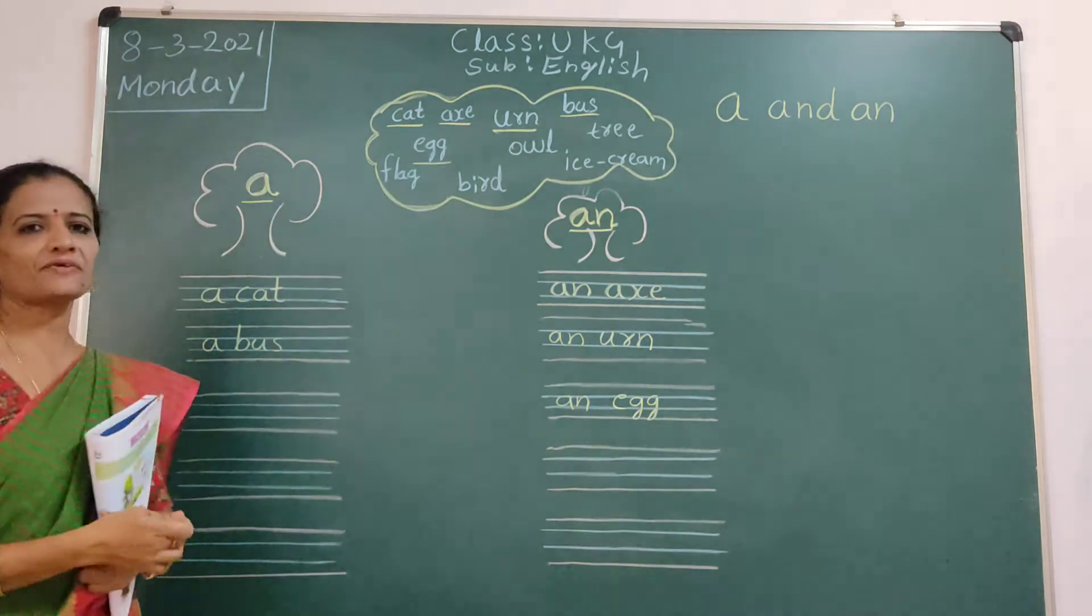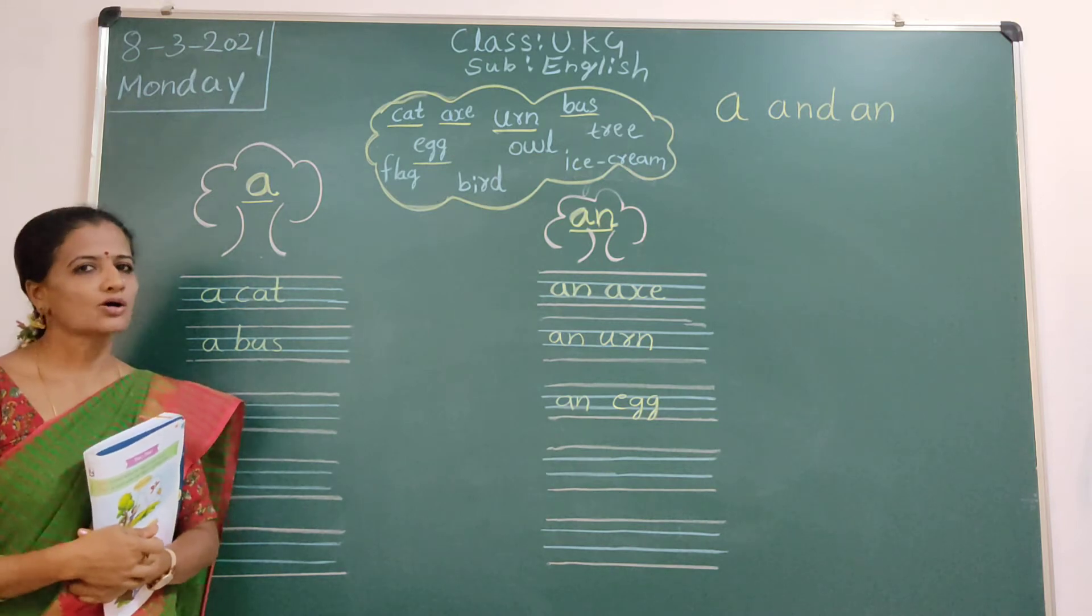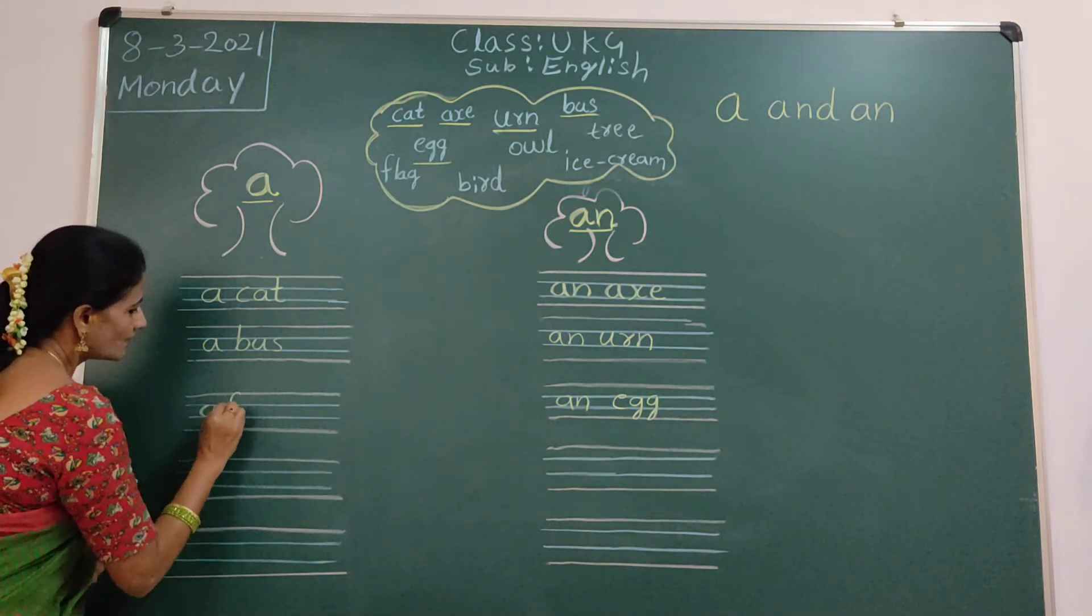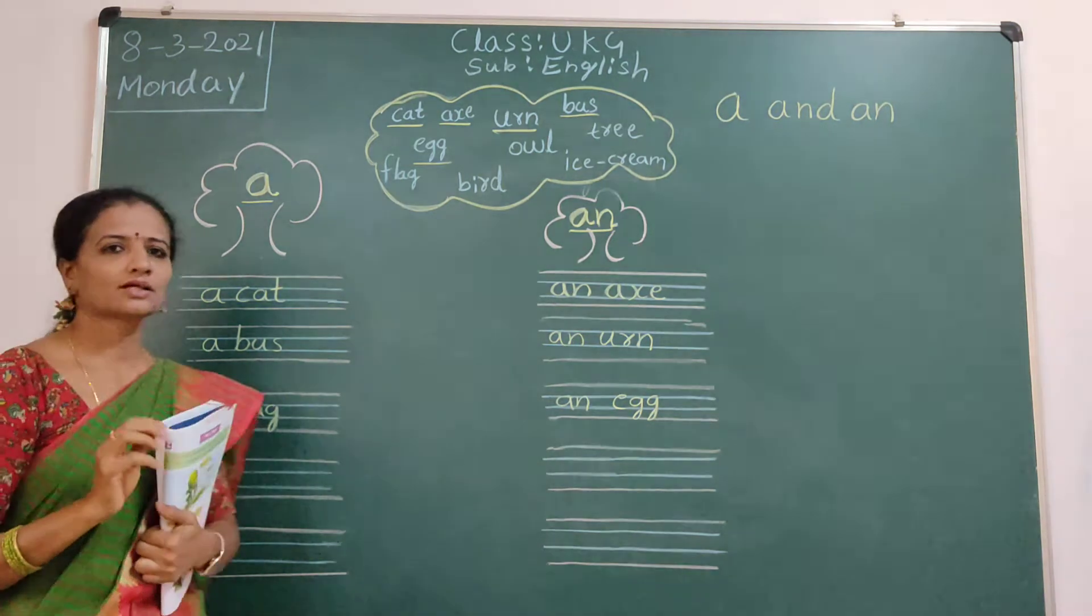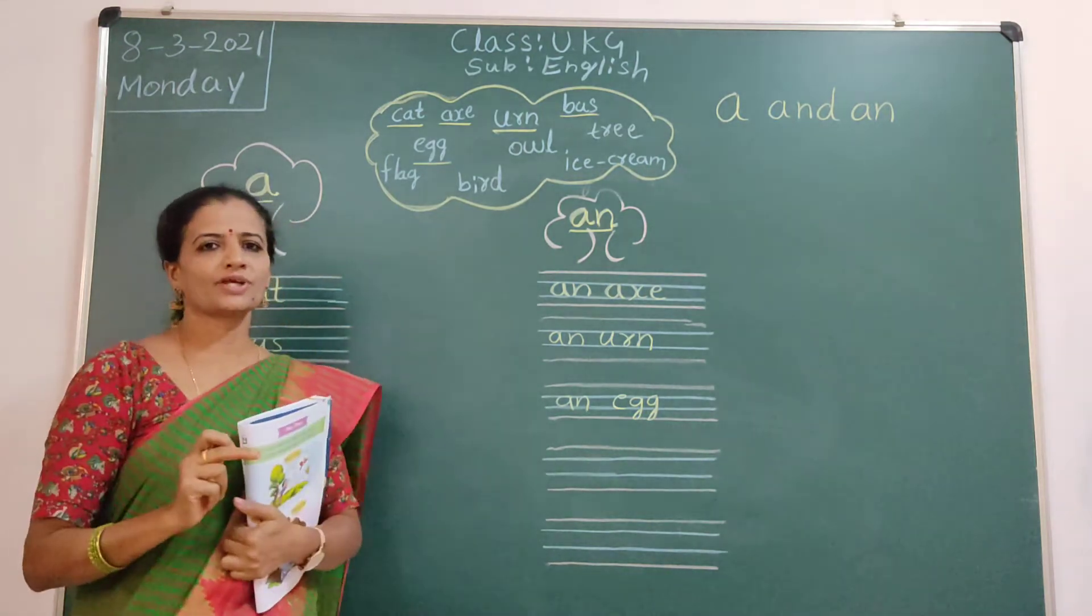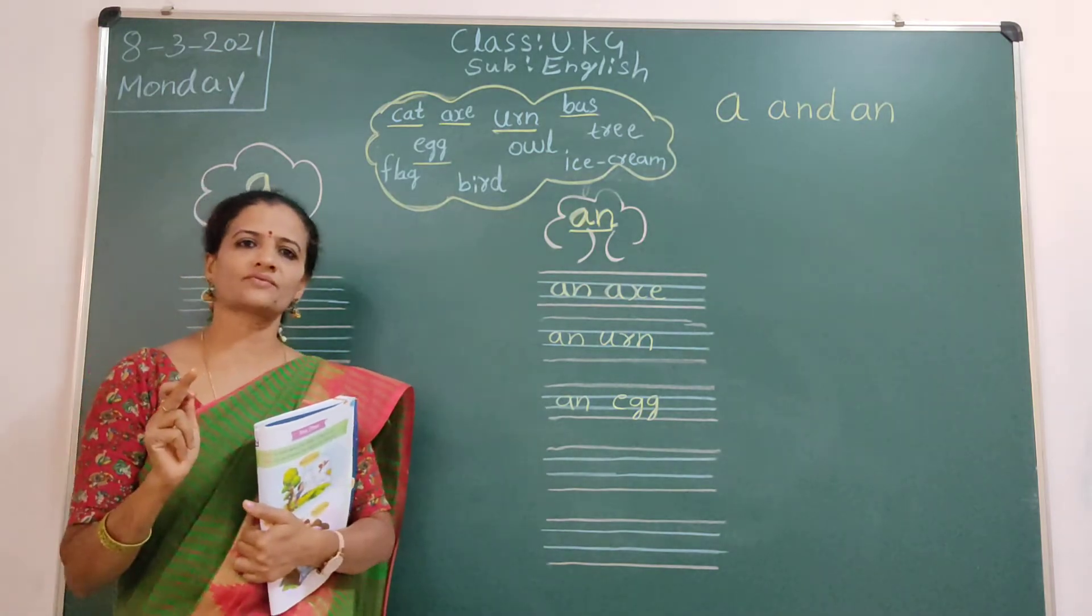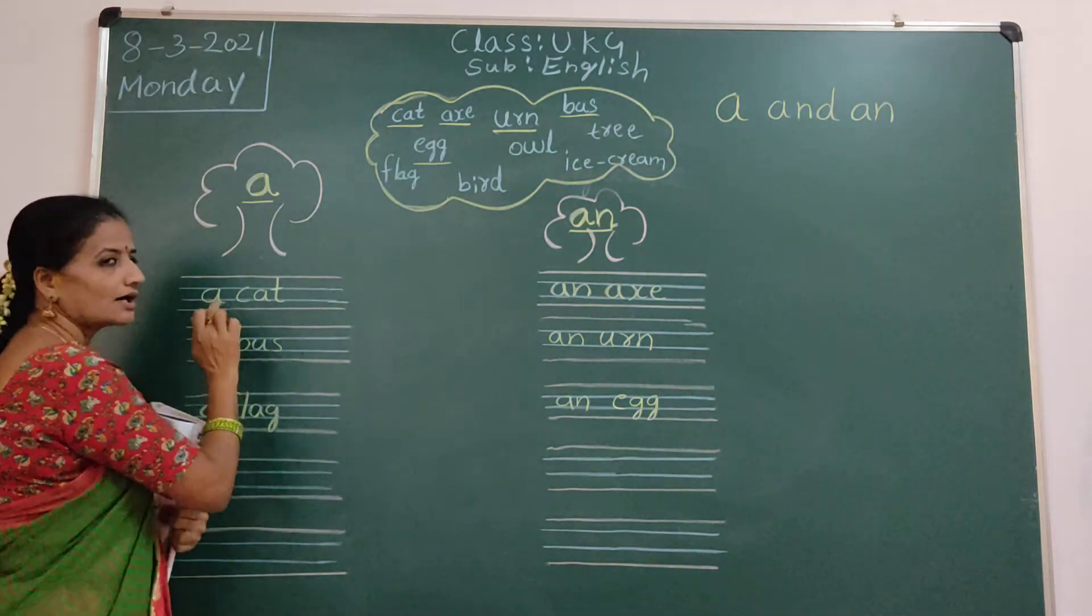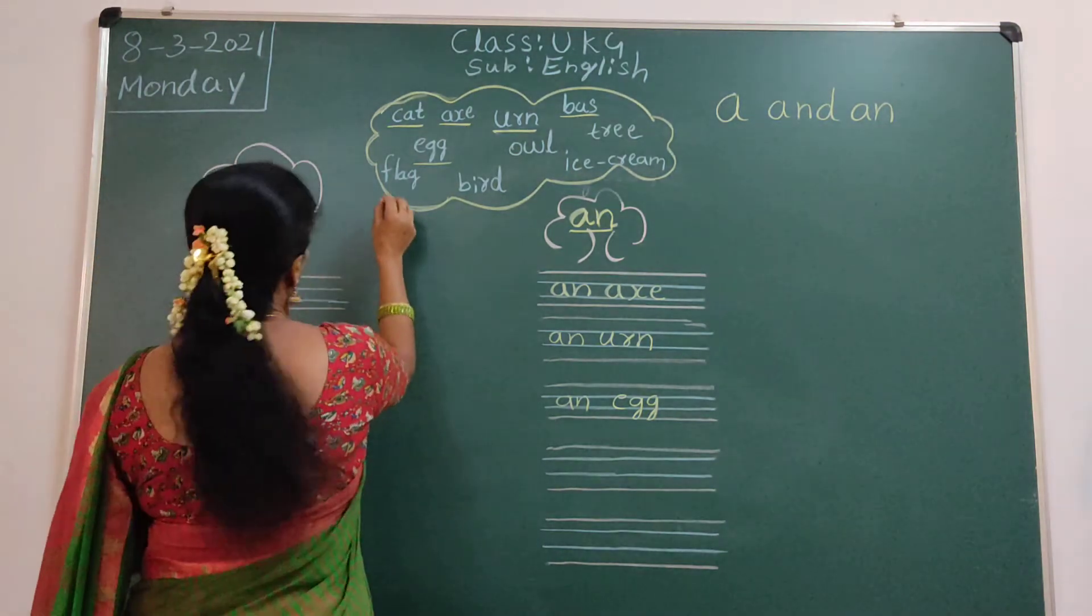Next, flag. F-L-A-G. Flag. So, F is a consonant. A flag. A flag. Understood children? First letter will come vowel sound means we will use An. First letter will come consonant means we will use A. Okay children. So, flag also finished.